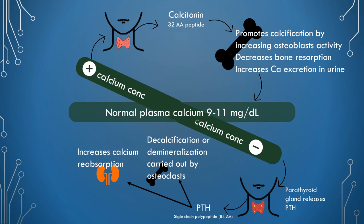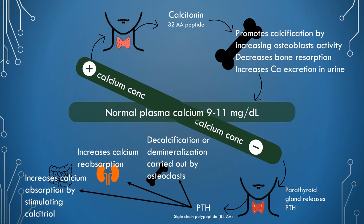The action of parathyroid hormone on the intestine is indirect. It increases intestinal absorption of calcium by promoting the synthesis of calcitriol, which is the biologically active form of vitamin D. In this way, when calcium concentration is increased, it is taken back toward normal, and when it decreases, it is again brought back toward the normal level through various mechanisms.